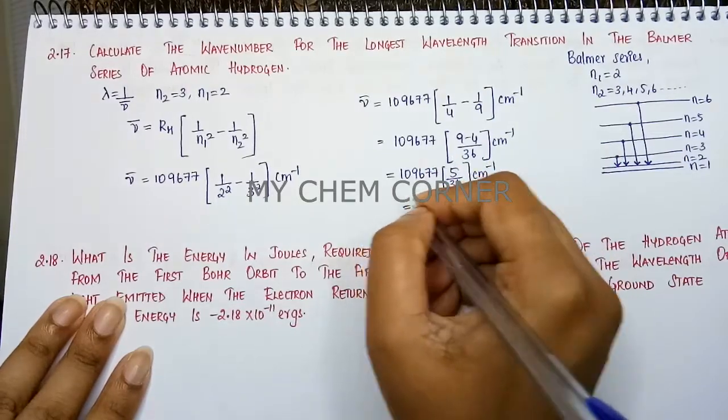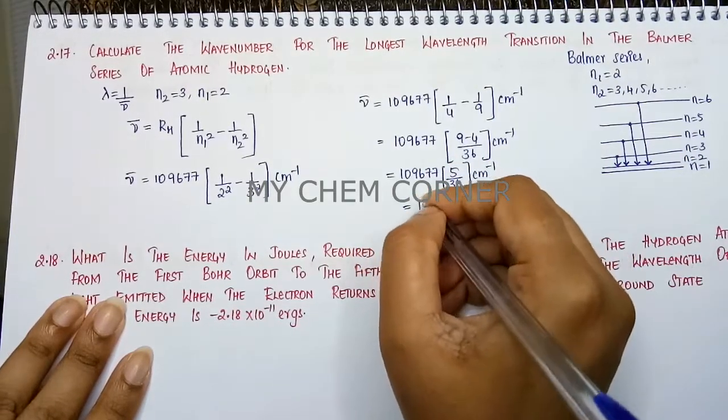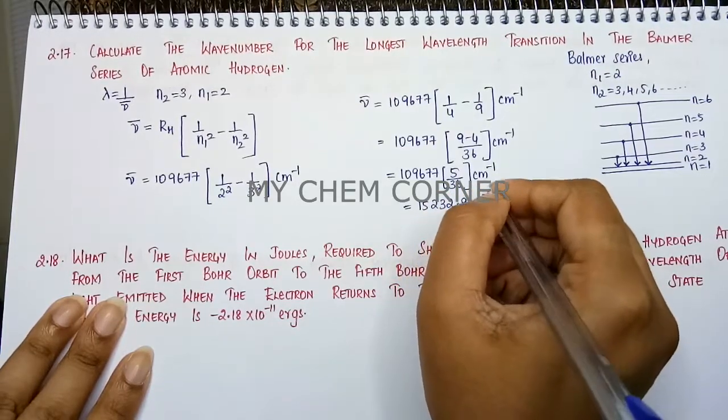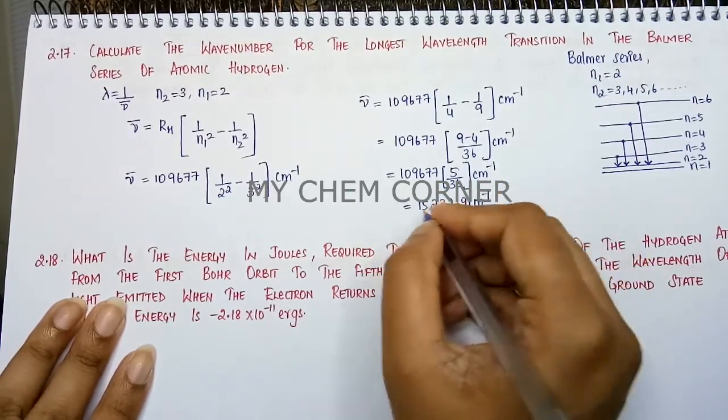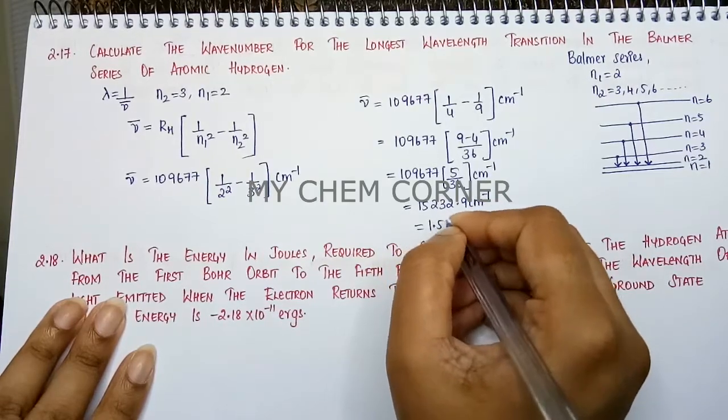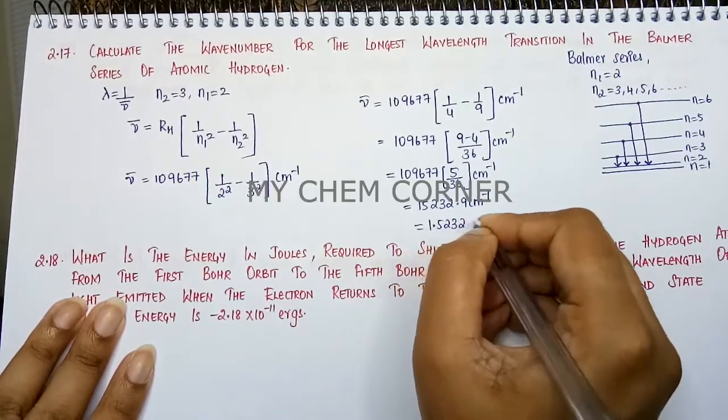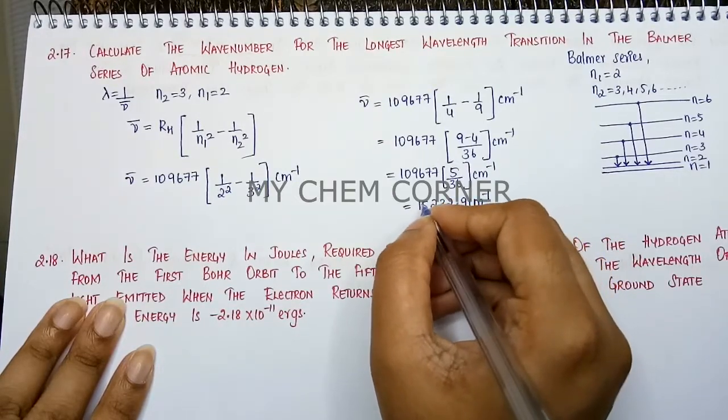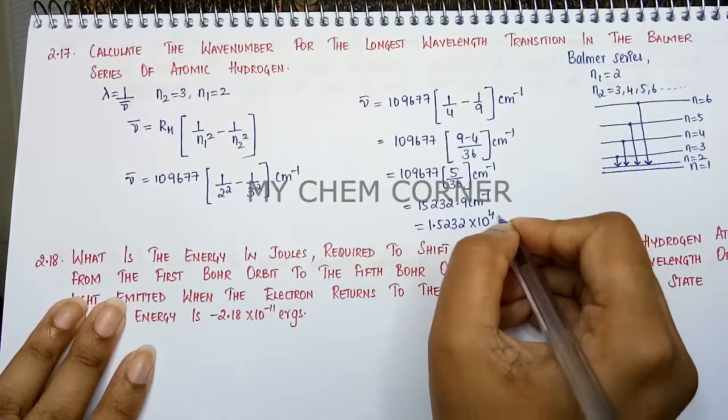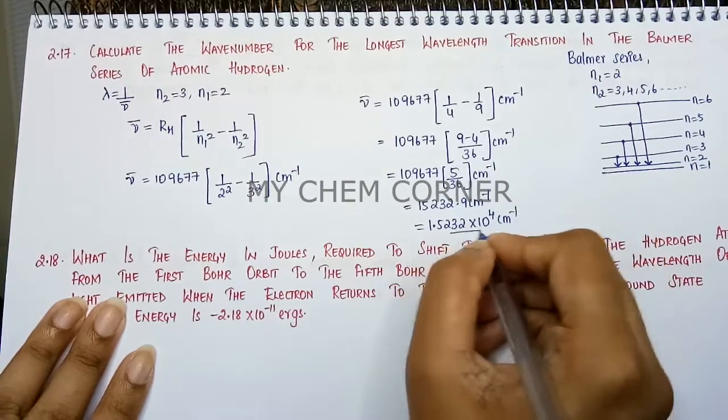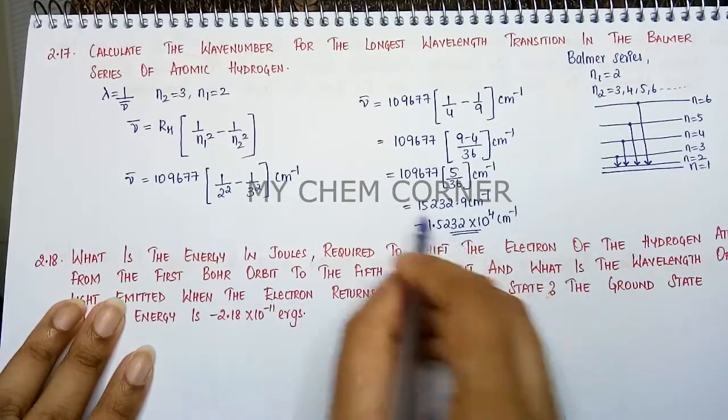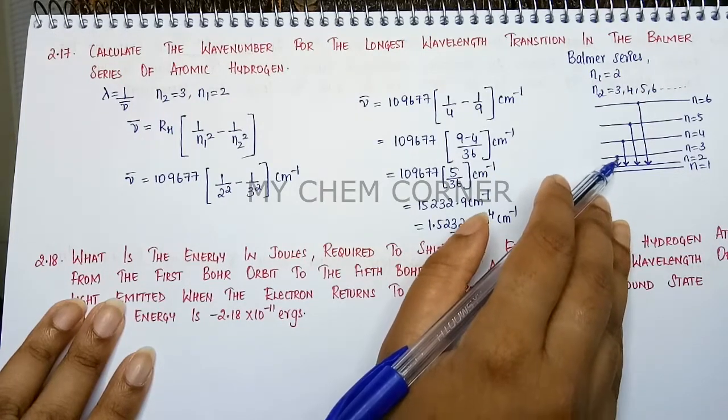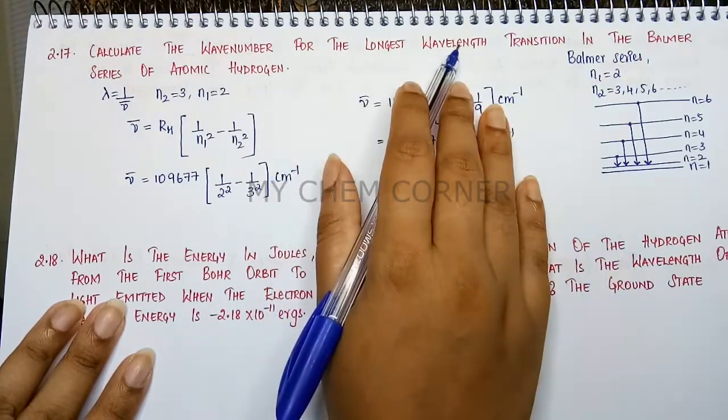This equals when we simplify the entire thing you get 15,232.9 centimeter inverse. So shift the decimal here you will get 1.5232 into 10 to the power 4 centimeter inverse. That is going to be the wave number for the shortest transition or the longest wavelength.